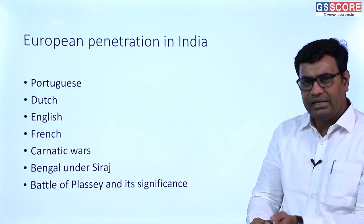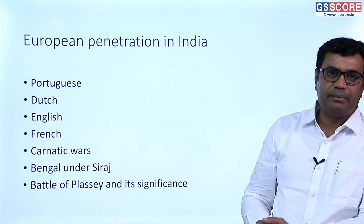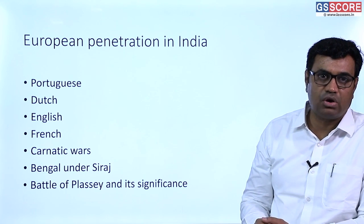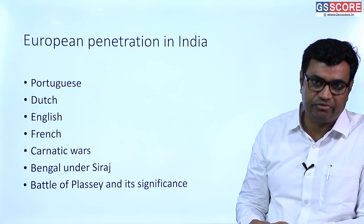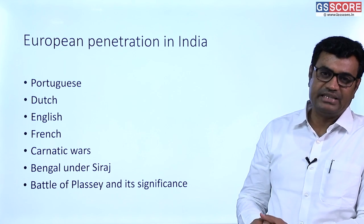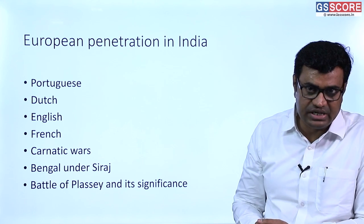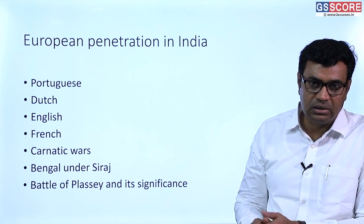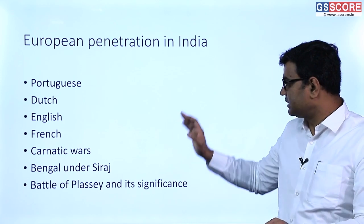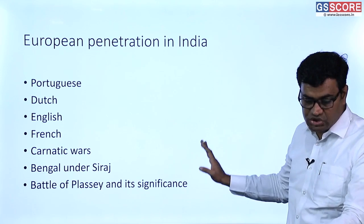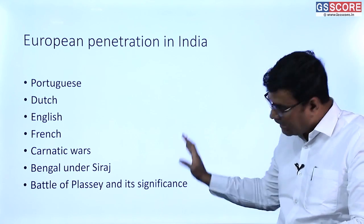As a result of the Battle of Plassey, the British were able to gain control over Bengal, the most prosperous province of India. They began to drain Bengal of its rich resources, which enabled them to conquer other parts of Indian territory. These are the topics mentioned under European penetration into India.